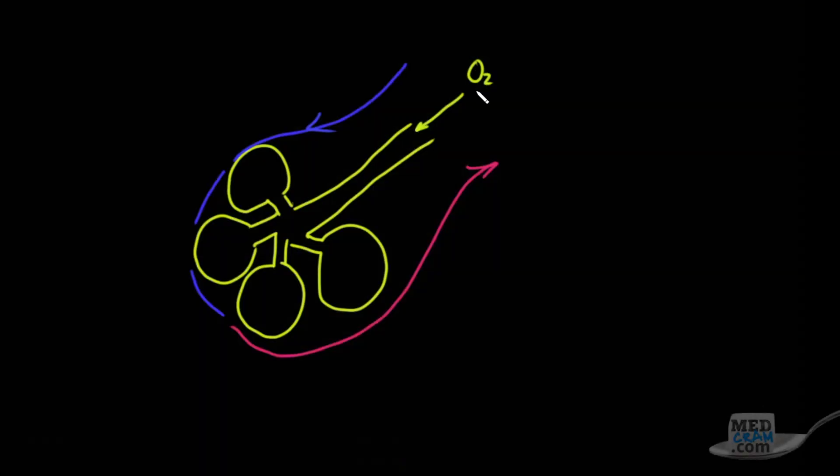So here's another look at that. We get oxygen that's going down into these terminal structures called the alveoli. They go into these alveoli, and they cause deoxygenated blood to turn into oxygenated blood and then go back to the heart.